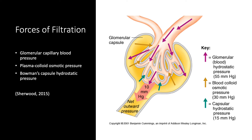The last force involved is the Bowman's capsule hydrostatic pressure. This is the pressure exerted by the fluid in the initial part of the tubule, estimated to be about 15 mmHg. This pressure, which tends to push fluid out of Bowman's capsule, opposes the filtration of fluid from the glomerulus into Bowman's capsule.